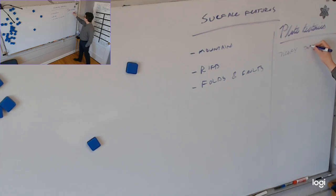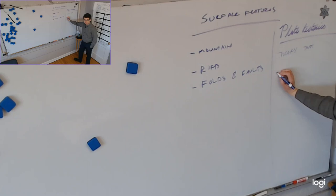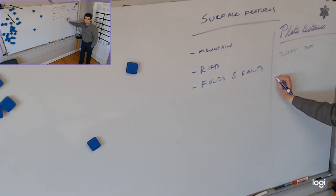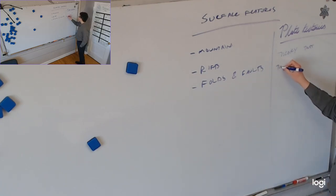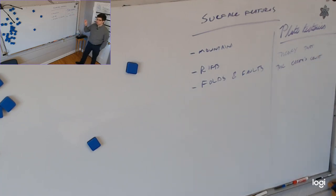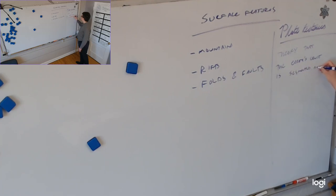Plate tectonics is the theory that deals with movement — specifically the movement of the earth's crust. Really we could say the crust of any planet where this occurs. Not every celestial body has plate tectonics, but on those where it does occur, that body's crust is segmented, and those segments move.